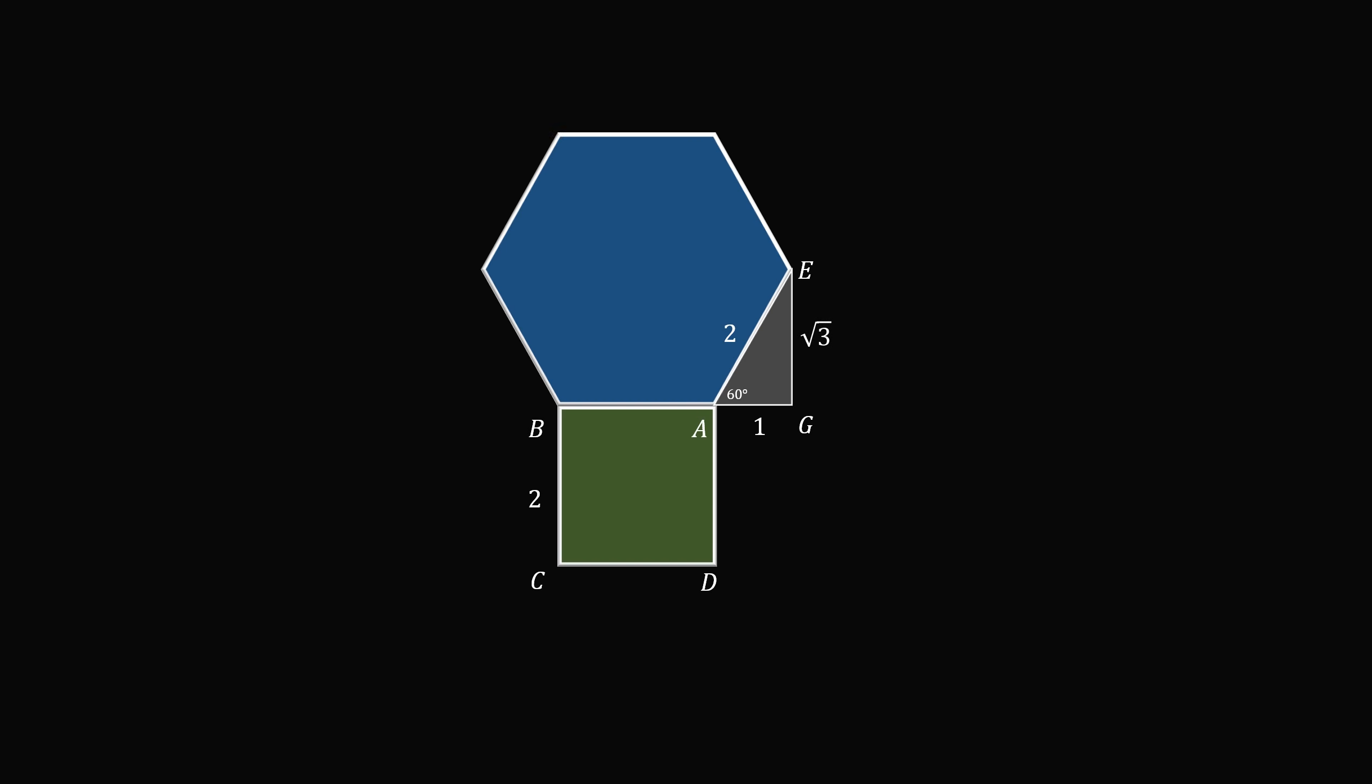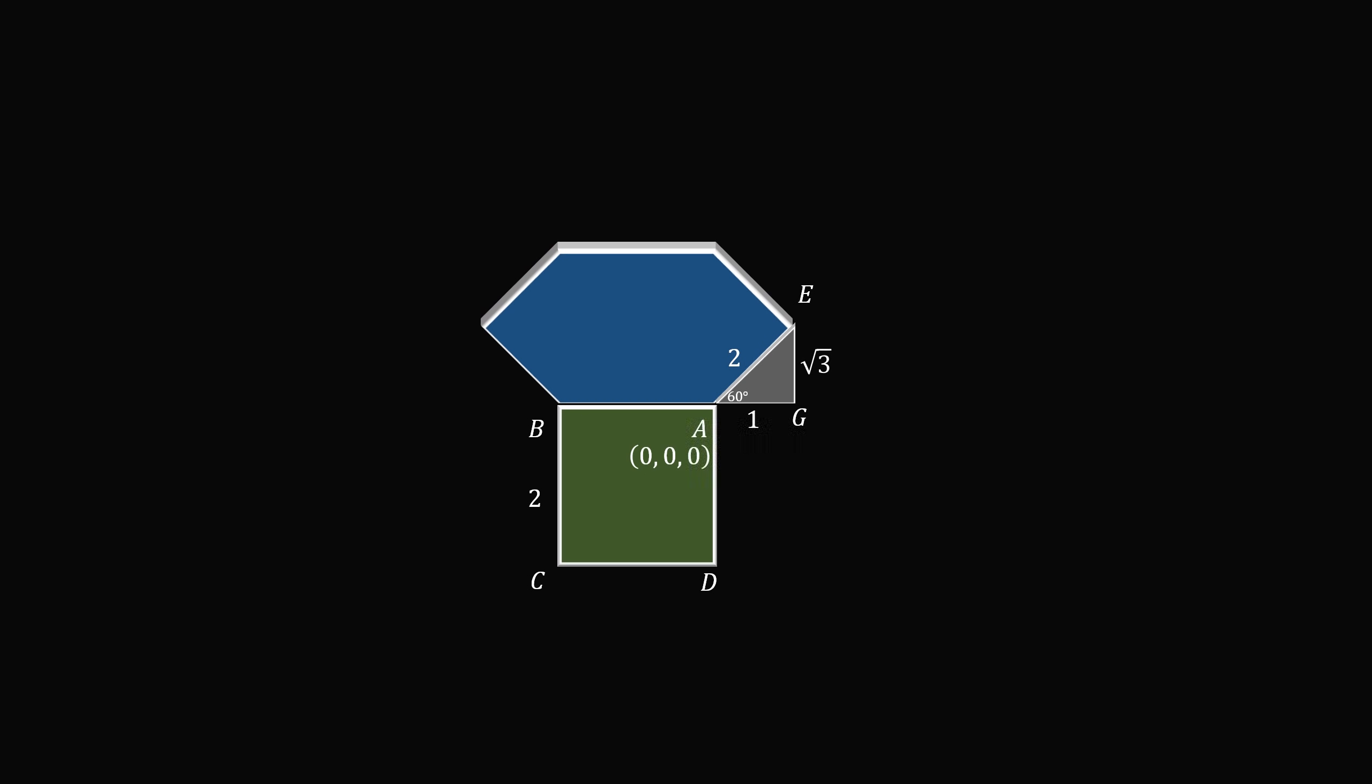Now let's set up a coordinate system where the point A is (0, 0, 0). This hexagon will be rotated t degrees upwards about the side AB. So now let's try to figure out the coordinates of the point E.